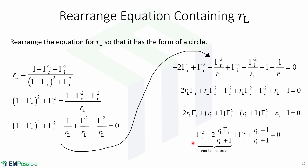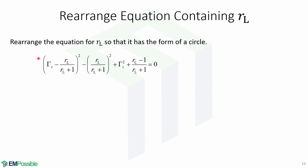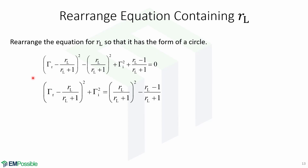Notice that these terms can be factored. After factoring, we obtain this expression. Then we move the terms with gammas to the left side and the other terms to the right side.